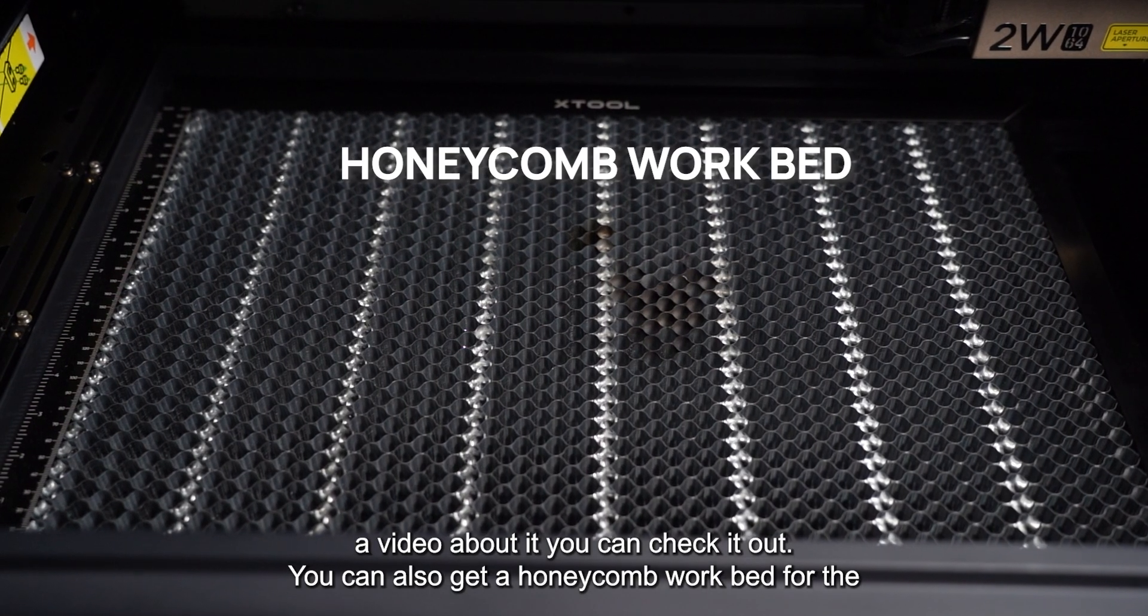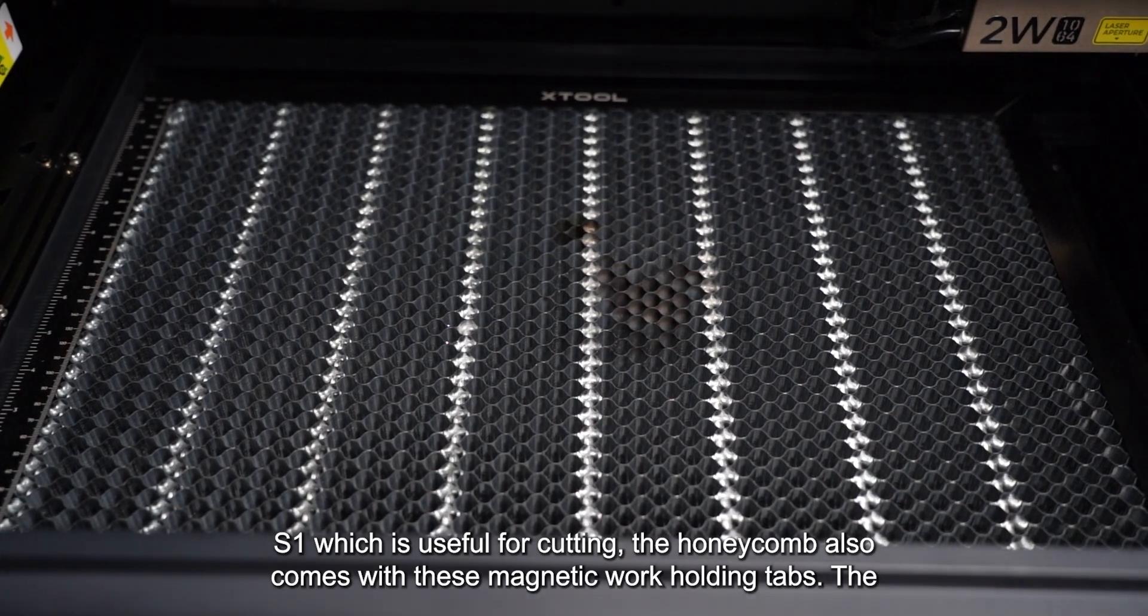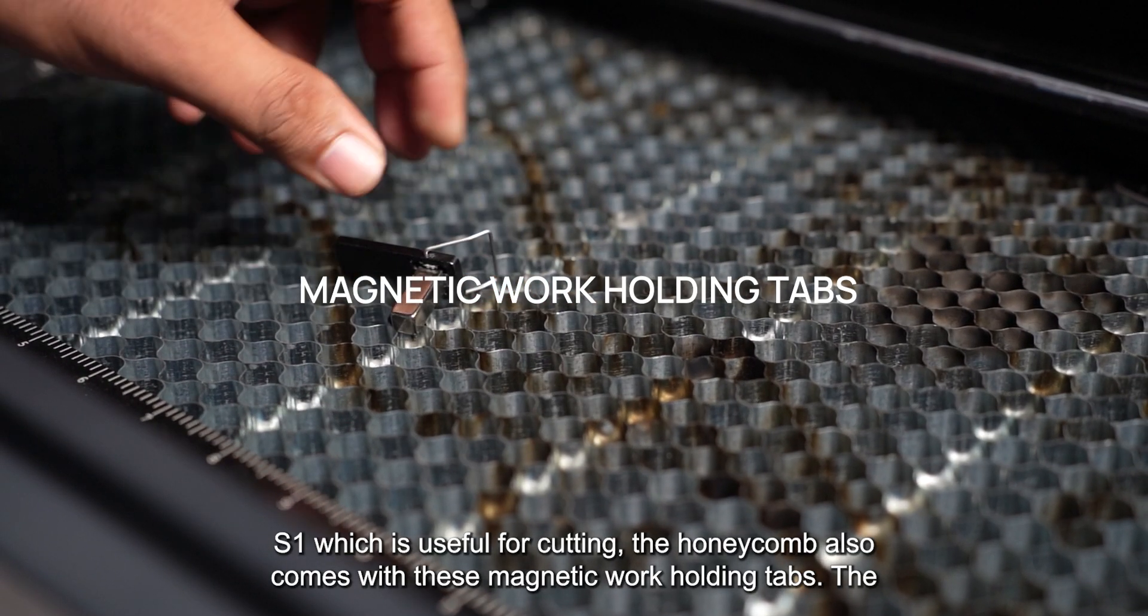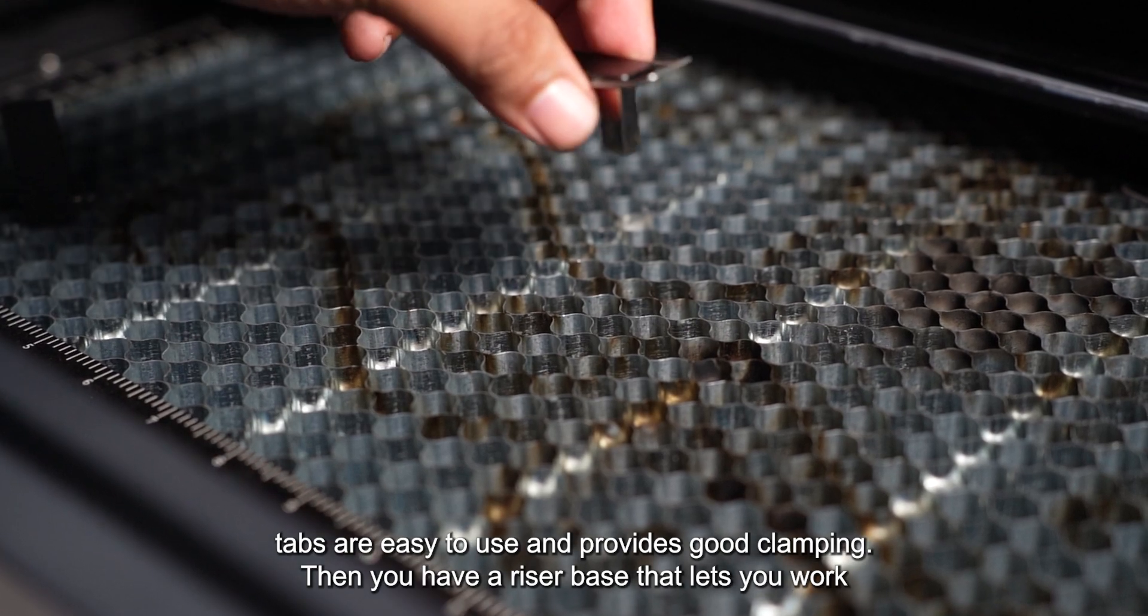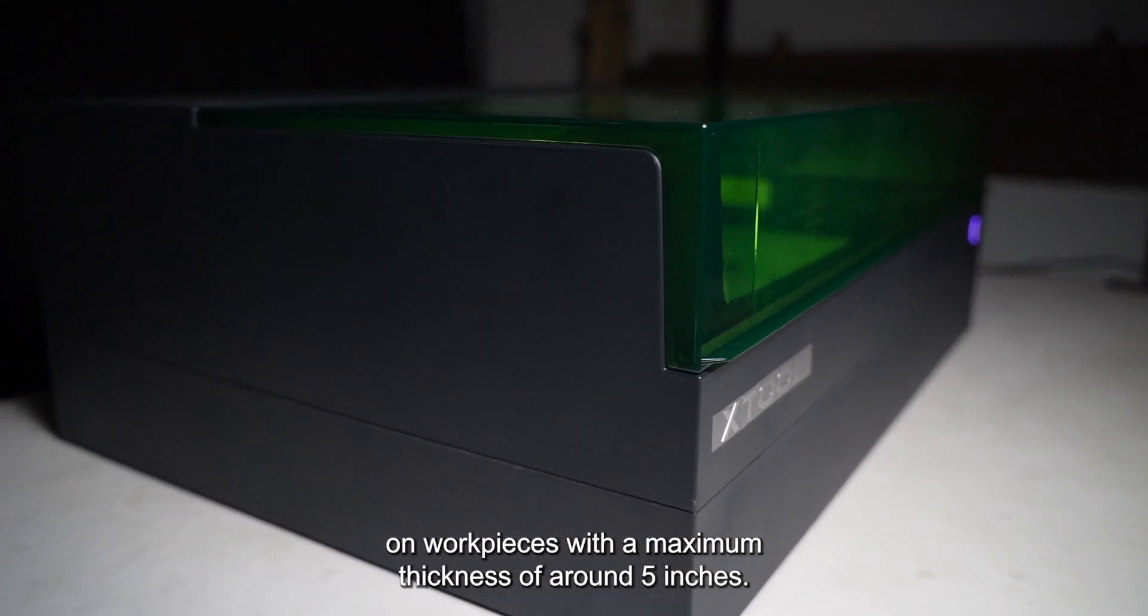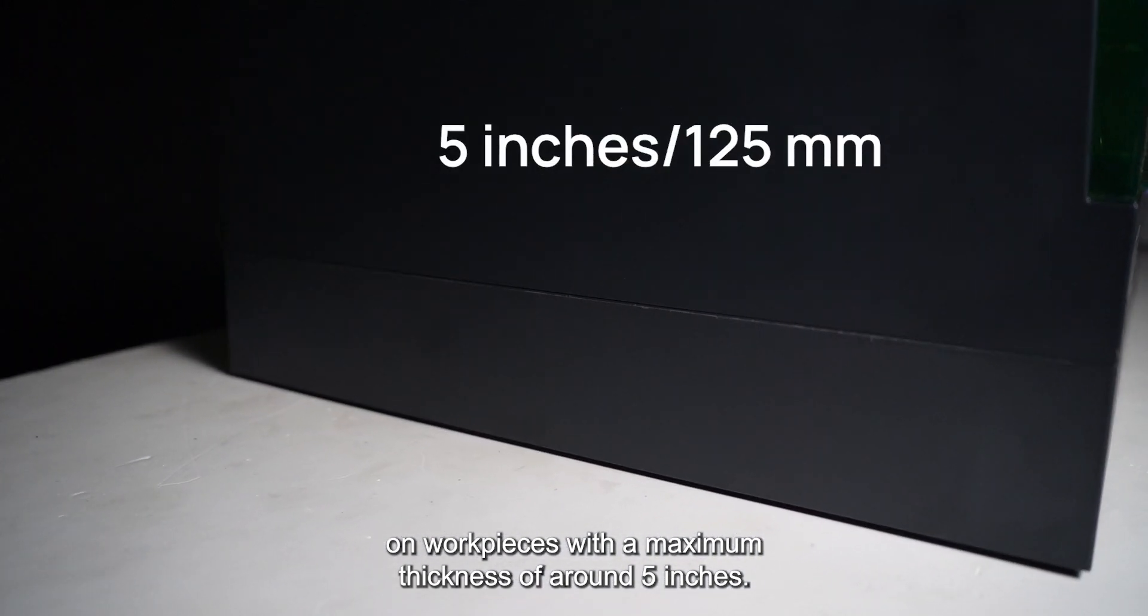You can also get a honeycomb workbed for the S1 which is useful for cutting. The honeycomb also comes with these magnetic work holding tabs. The tabs are easy to use and provides good clamping. Then you have a riser base that lets you work on work pieces with a maximum thickness of around 5 inches.